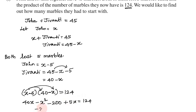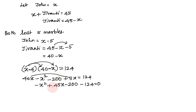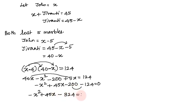Now combining: minus x squared, 40x plus 5x gives 45x, minus 200 equals 124. Bringing 124 to the left: minus x squared plus 45x minus 200 minus 124 equals 0. So minus x squared plus 45x minus 324 equals 0.